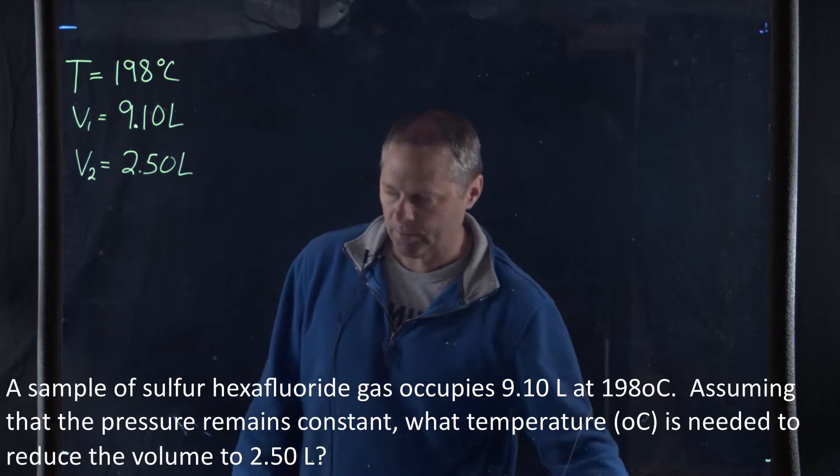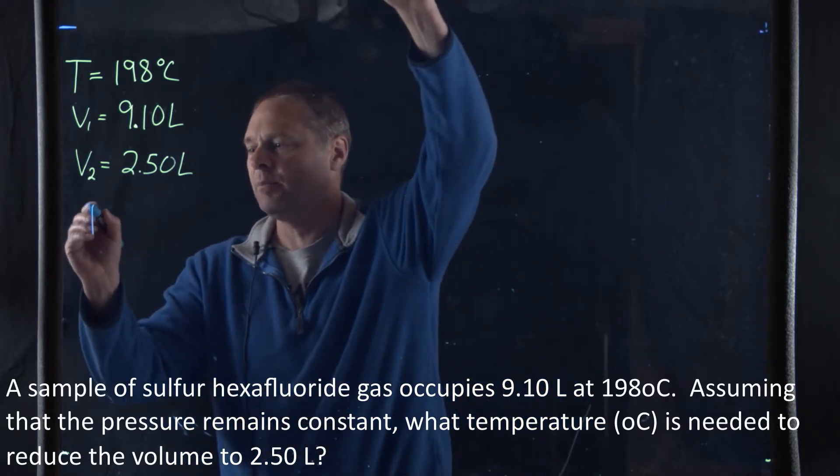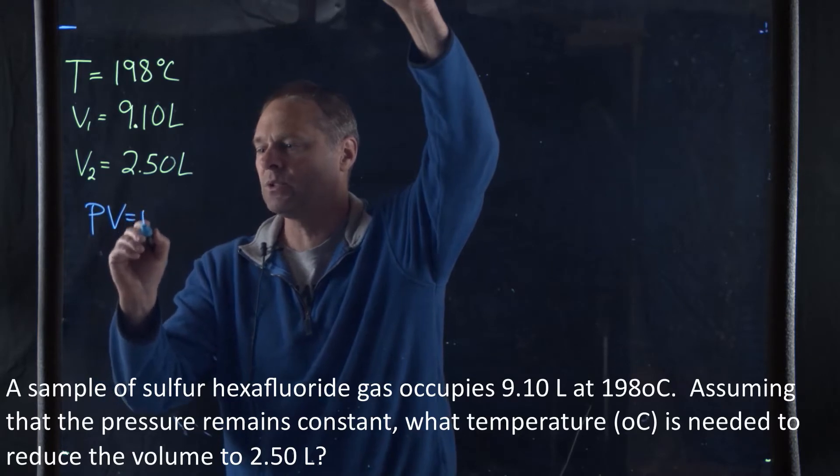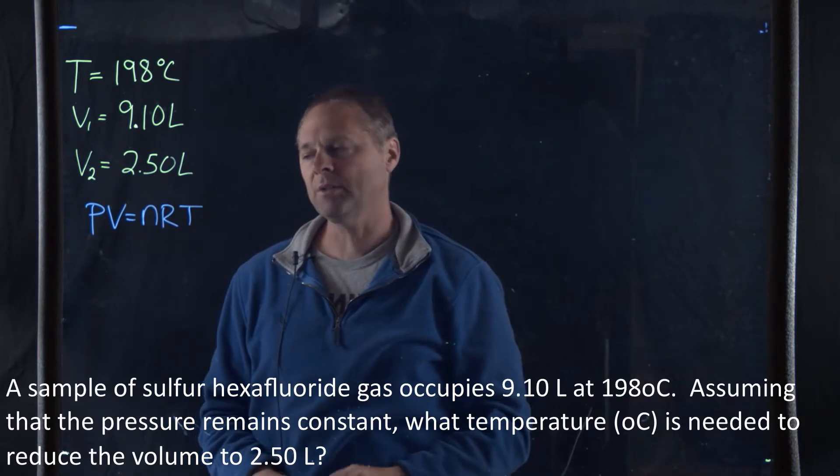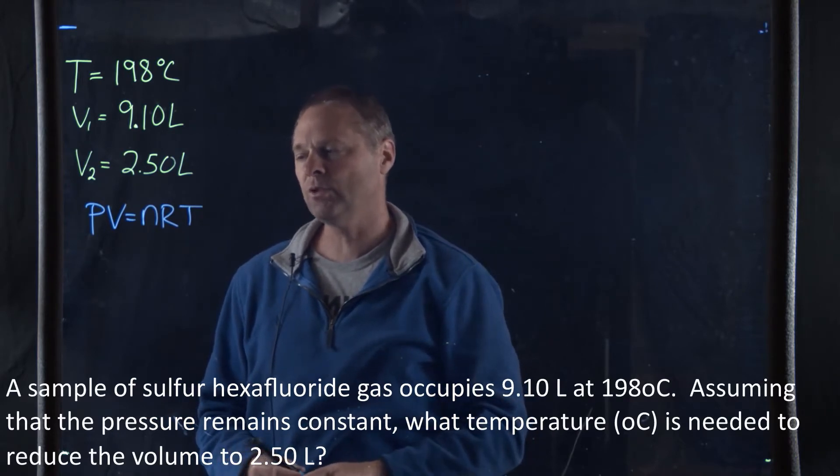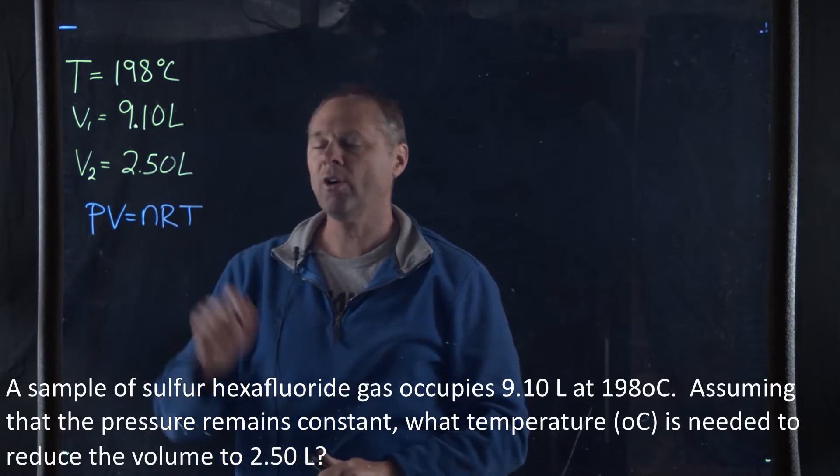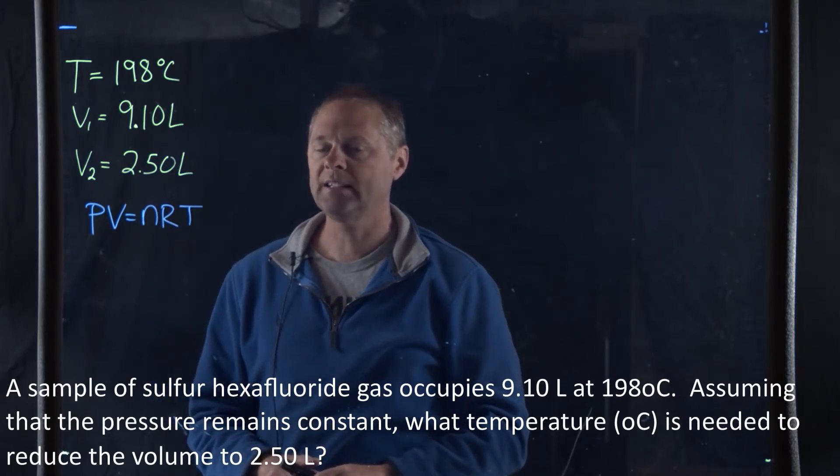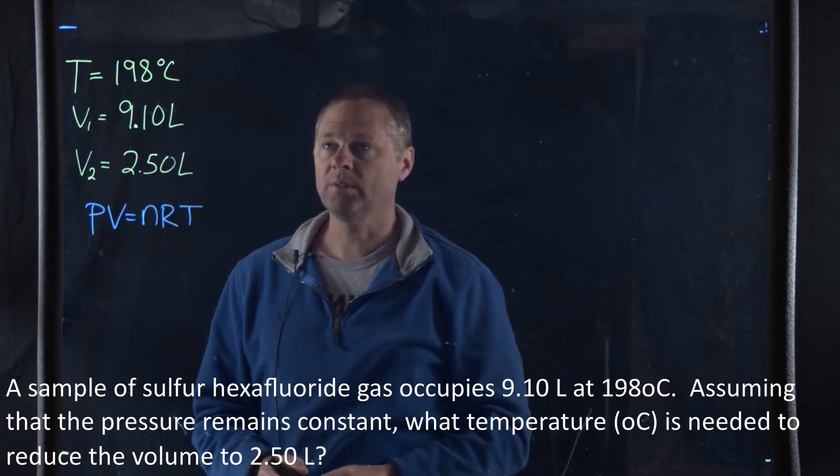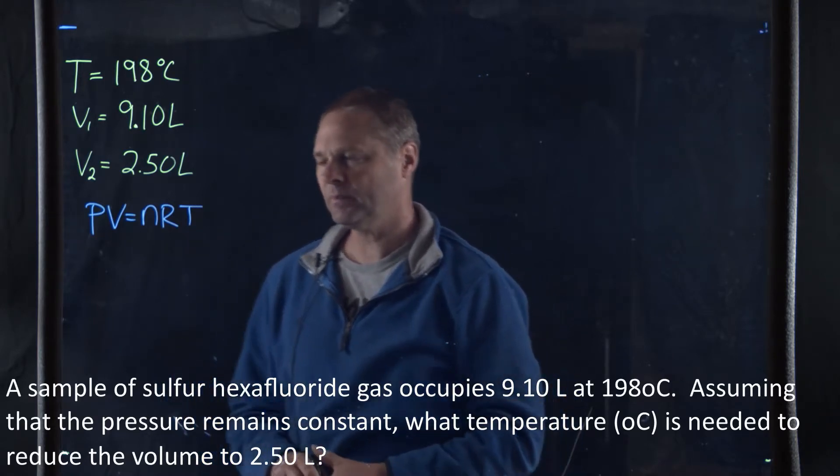As I stated, we're going to be dealing with the ideal gas law. And the ideal gas law is PV equals nRT, where P is pressure, which will be in the units of atmospheres, V is volume, which will be in units of liters, n is going to be the number of moles, R is the ideal gas constant, which is 0.08206 liter atmosphere per mole Kelvin, and T is temperature, which will be in the units of Kelvin.